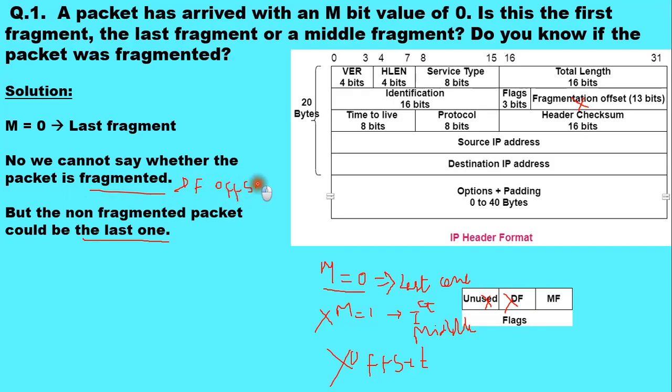So here when M equal to 0, the packet is the last fragment. So this completes the example. Thank you.